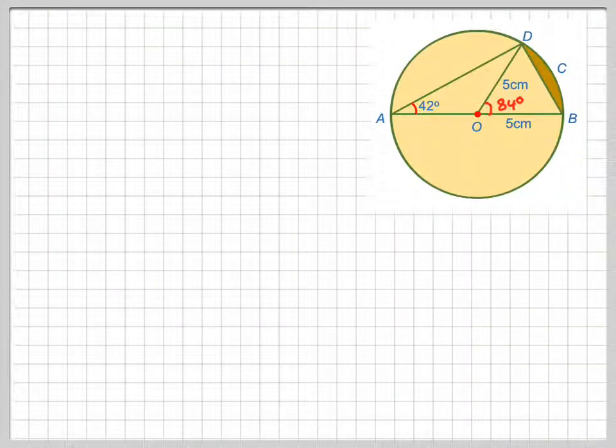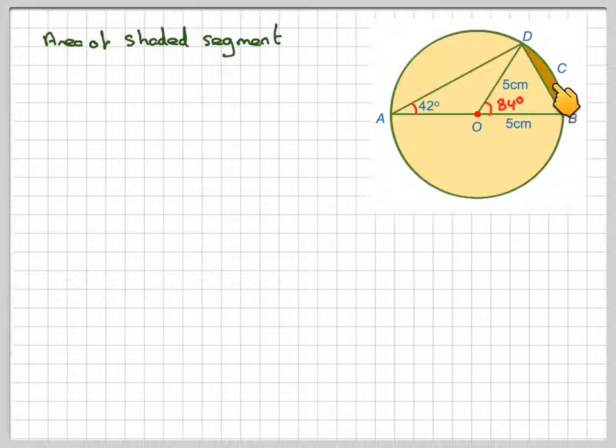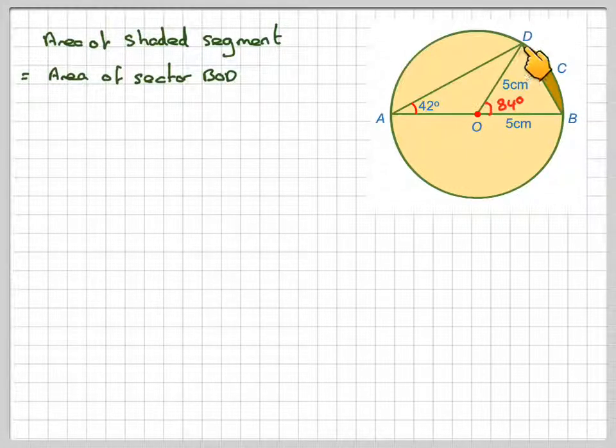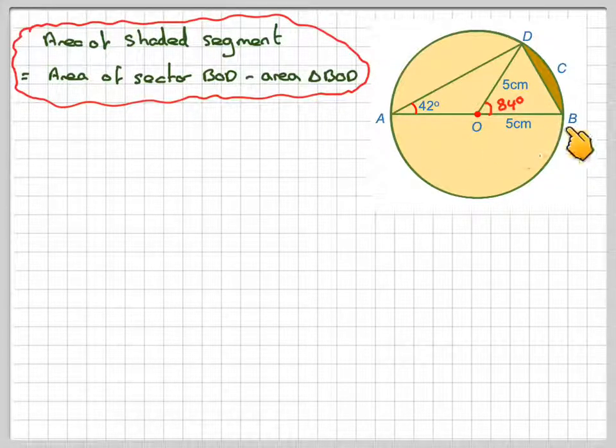Using the idea that this is 84, the area of the shaded segment is equal to the area of sector OBD minus the area of triangle OBD.